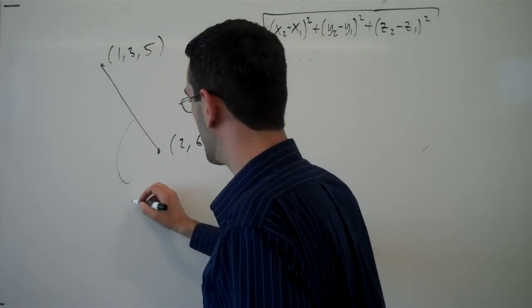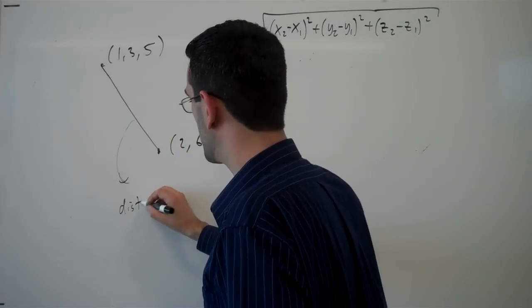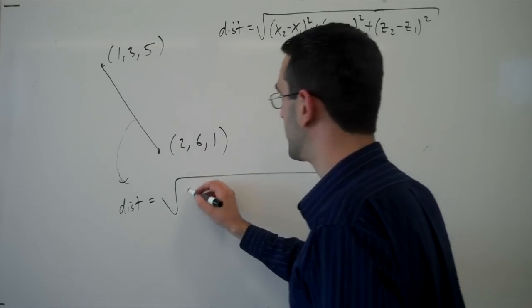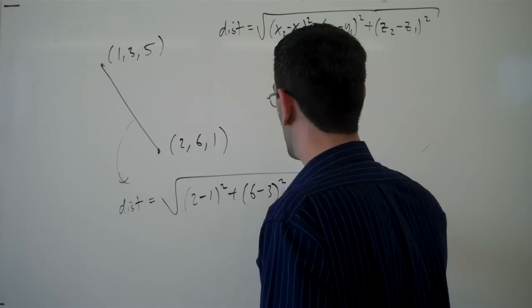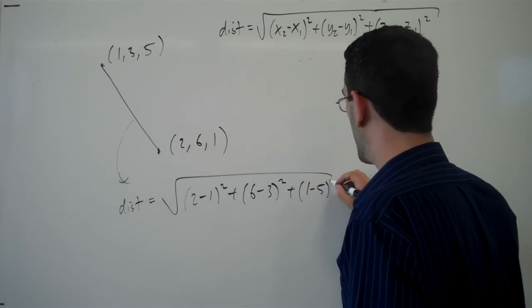So in this case, the distance between the points would just be the square root of 2 minus 1 squared plus 6 minus 3 squared plus 1 minus 5 squared.